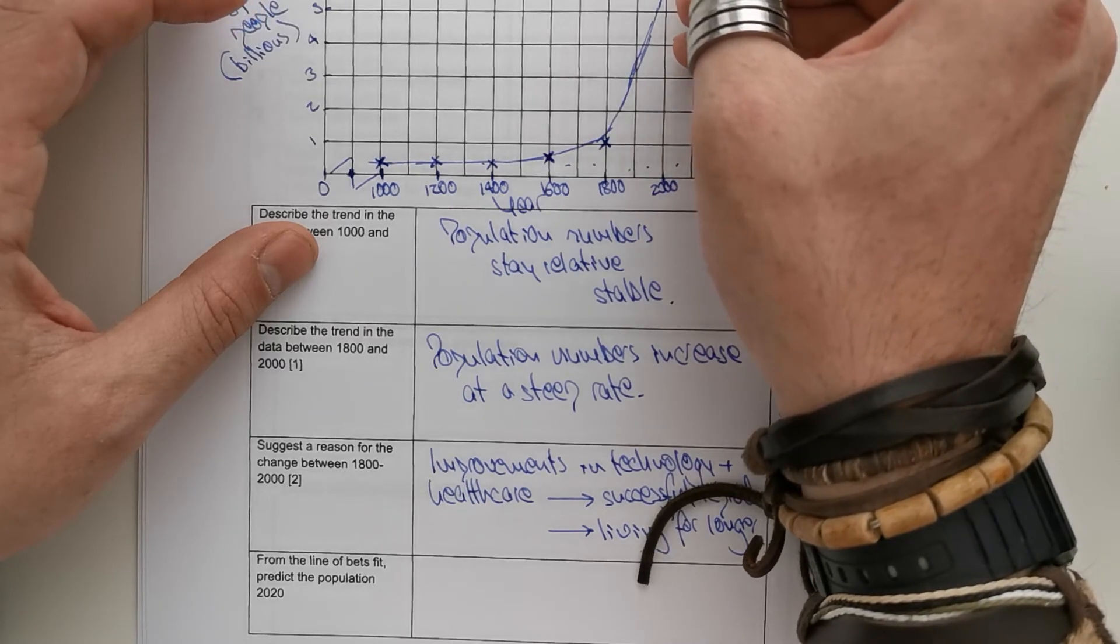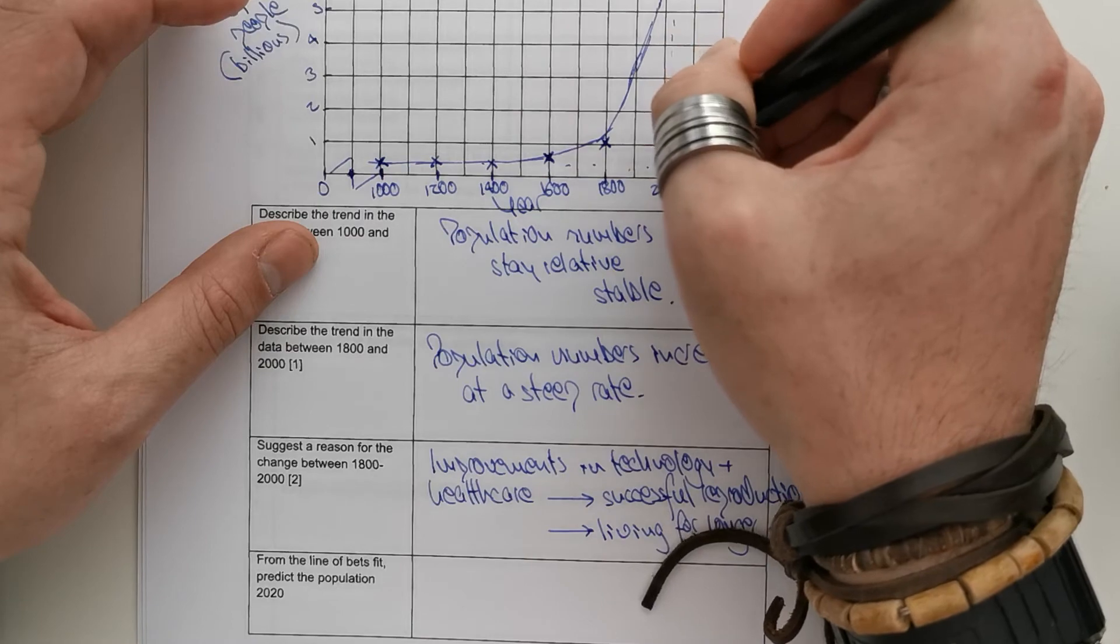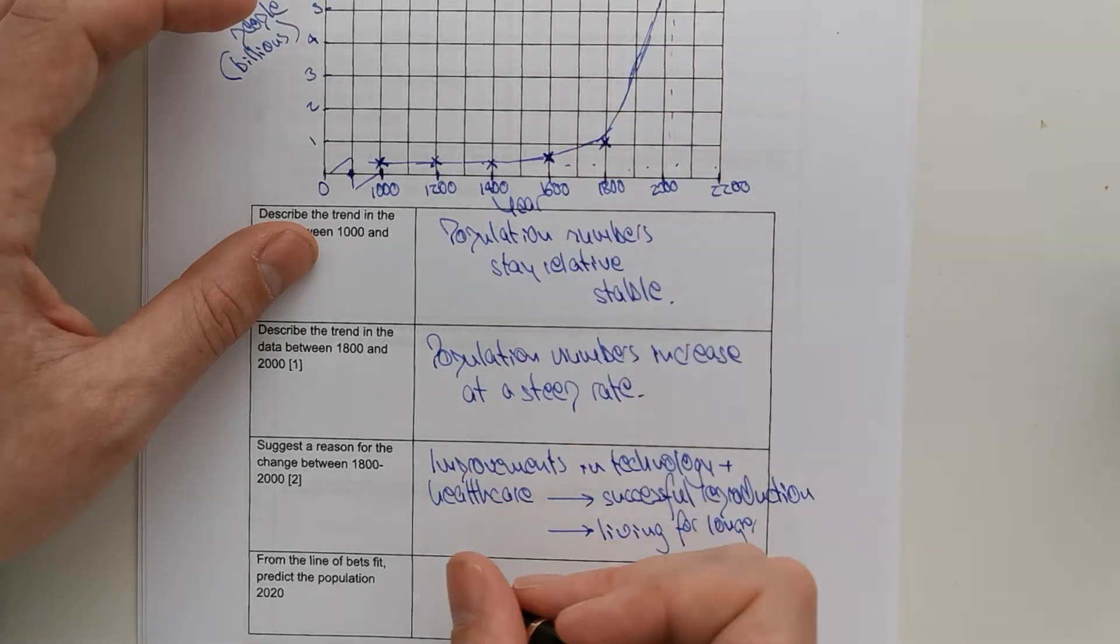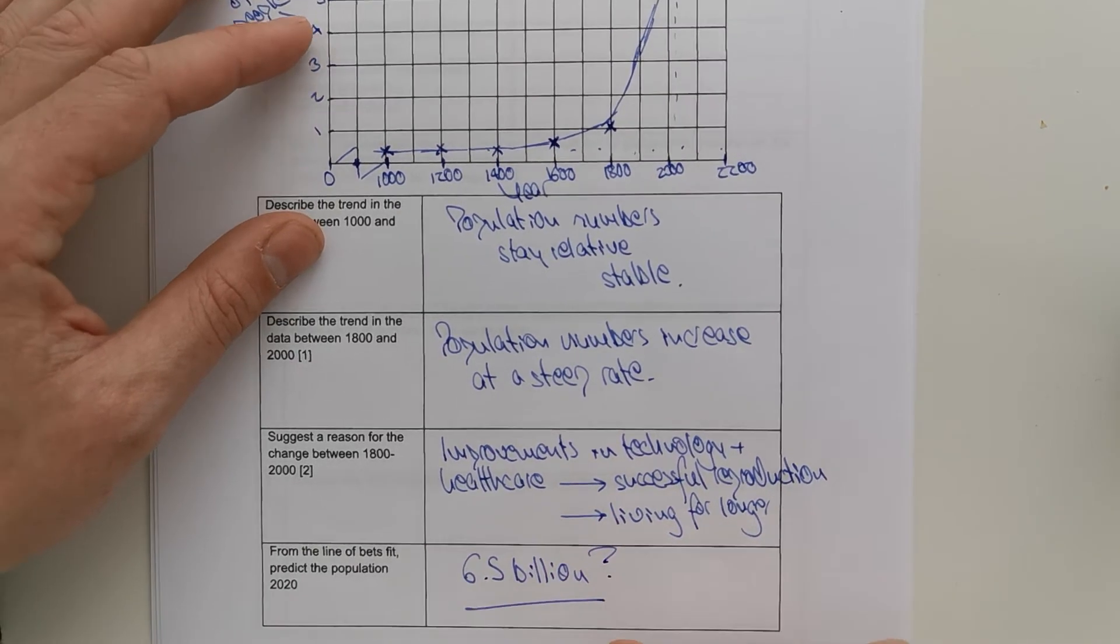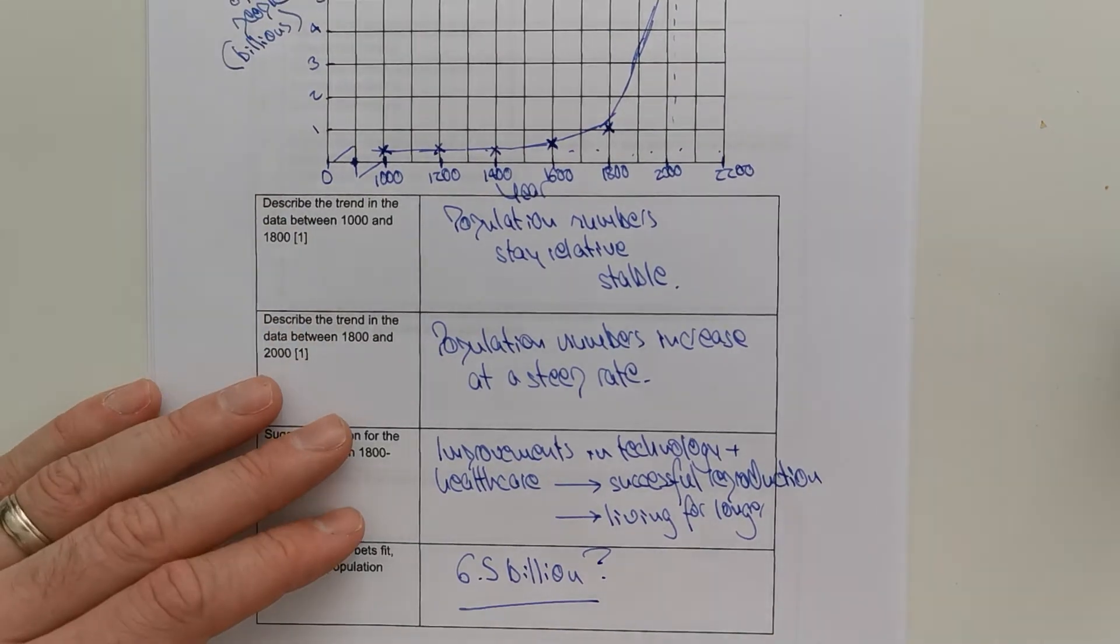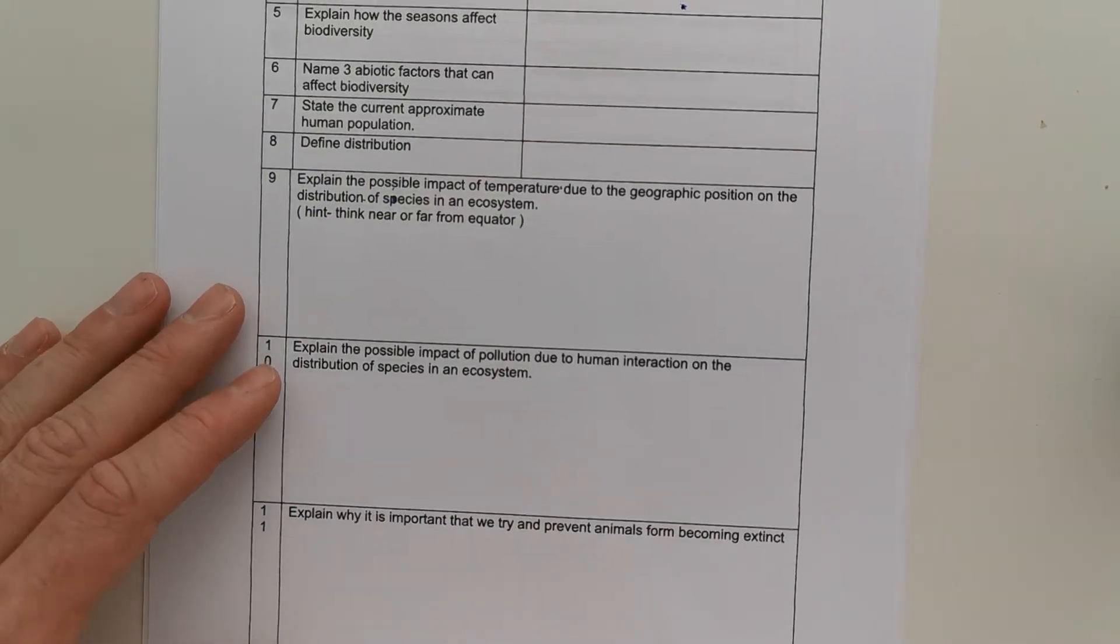Now, suggest a reason for the change between 1,800 and 2,000. Might be because you've got improvements in technology and healthcare, leading to more successful reproduction and also living for longer. Now, if we're going to predict the line of best fit, we might say roughly about here. 2020, say about 6.5 billion. But I think, in world population numbers, it might have increased even more than that. So, it might have increased at an even greater rate. That's the idea of what we're trying to get you to do there.